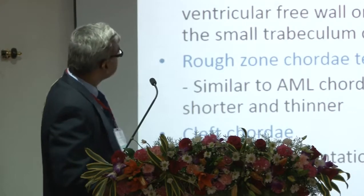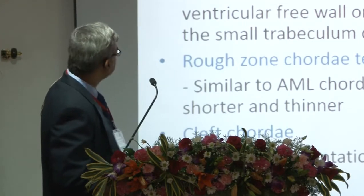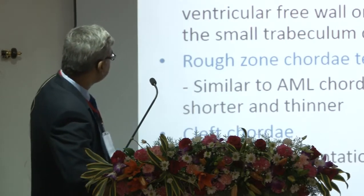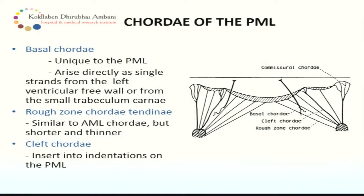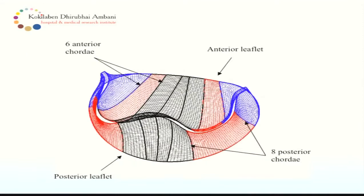Similarly, the chordae of the PML are also from both papillary muscles. What is unique to the PML is that it arises as a single strand from the left ventricular free wall as small trabecular chordae. The rough zone chordae tendineae are similar to those of the AML but shorter and thinner. The cleft chordae insert into the indentations of the PML. At each zone, with six scallops, there are roughly around six on the anterior leaflet side and eight on the posterior leaflet side, amounting to roughly around 28 main chordae, with possible variation of basal chordae.